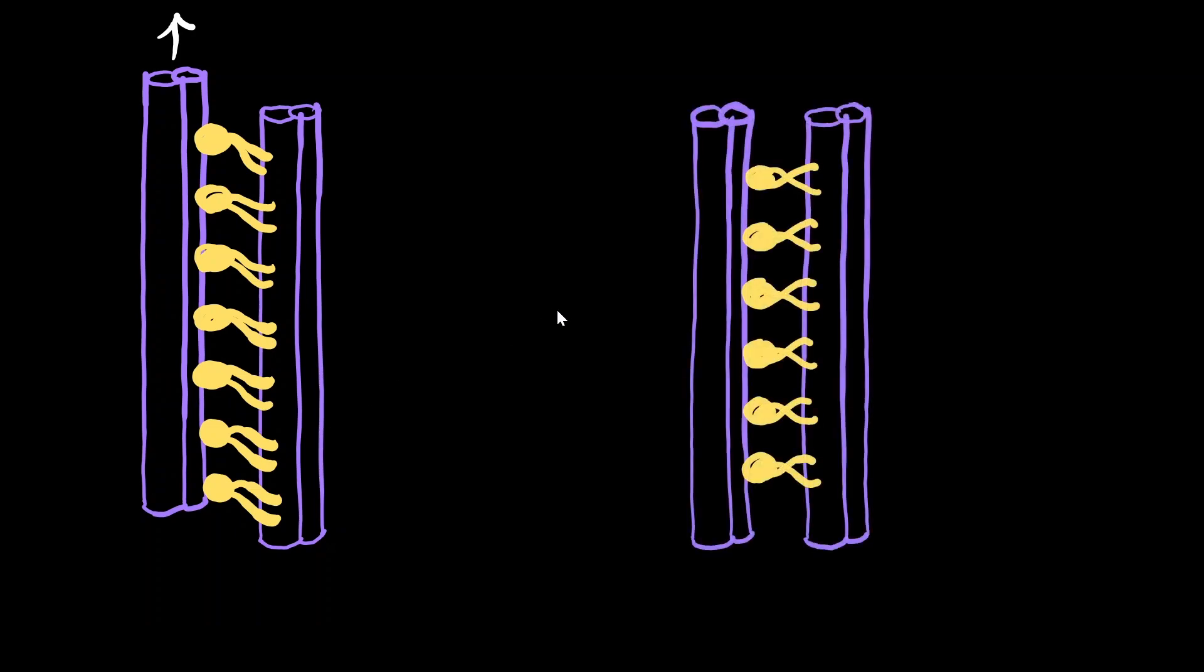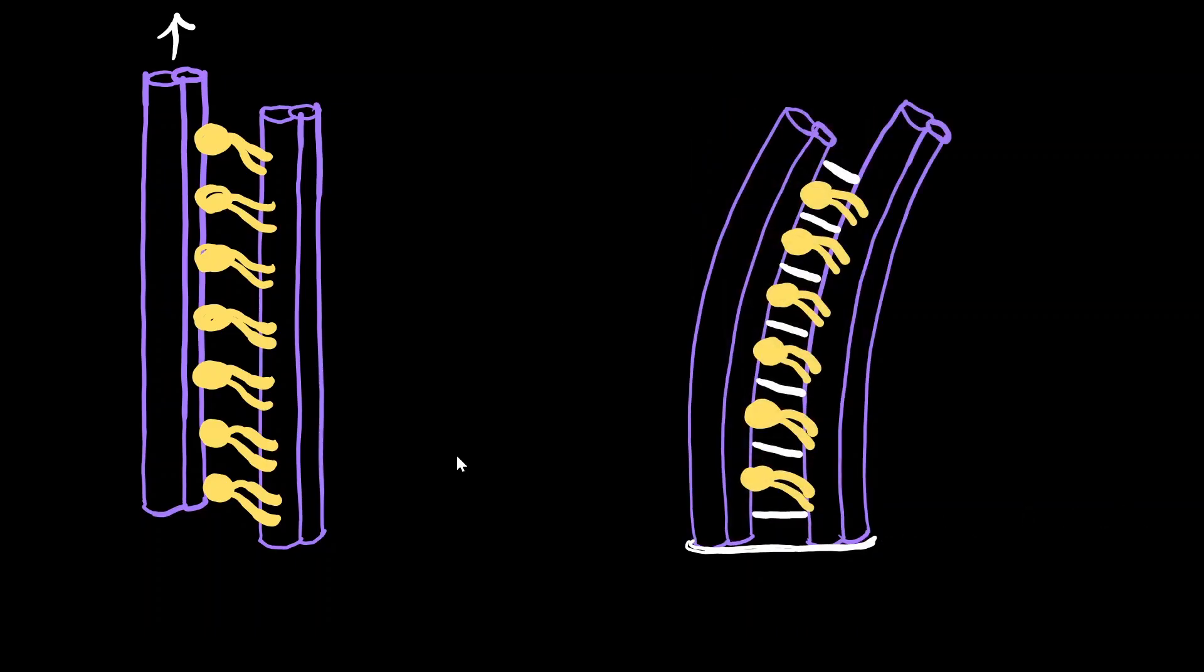But we know that the microtubule doublets are not free. They are attached to a structure called the basal plate. The doublets are also connected to each other by nexin protein which actually limits how much the microtubule can slide past each other. So now let's say when one microtubule wants to move ahead, the microtubules curve and this causes the overall bending of the flagella. The bending movement plays a very important role in flagellar and ciliary locomotion.